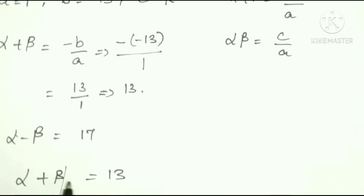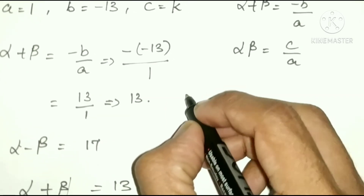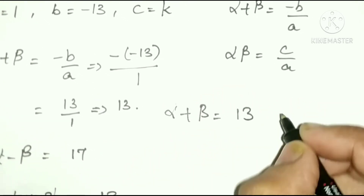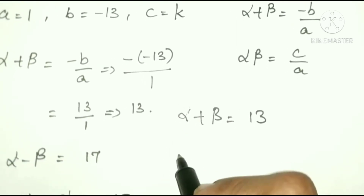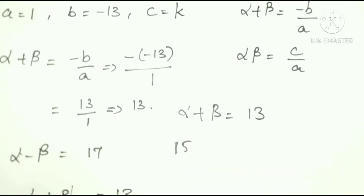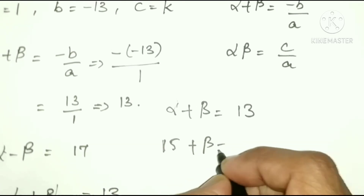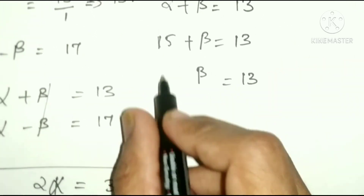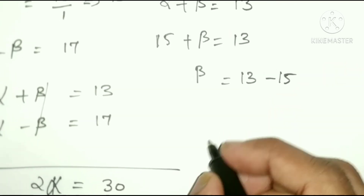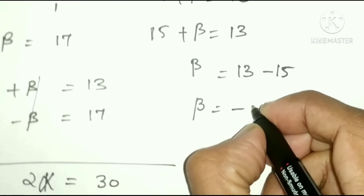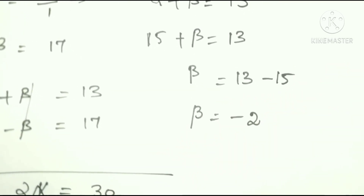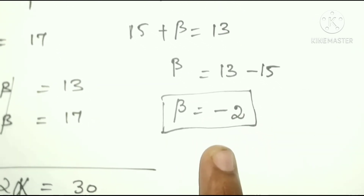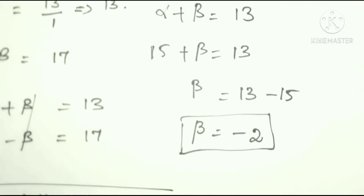Now substituting alpha equals 15 back into alpha plus beta equals 13: 15 plus beta equals 13, so beta equals 13 minus 15, which means beta equals minus 2.